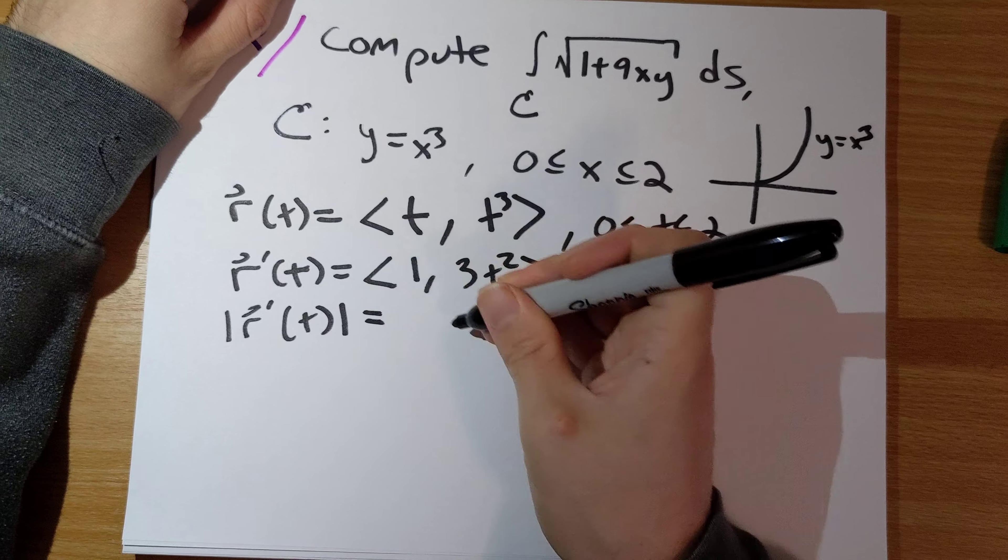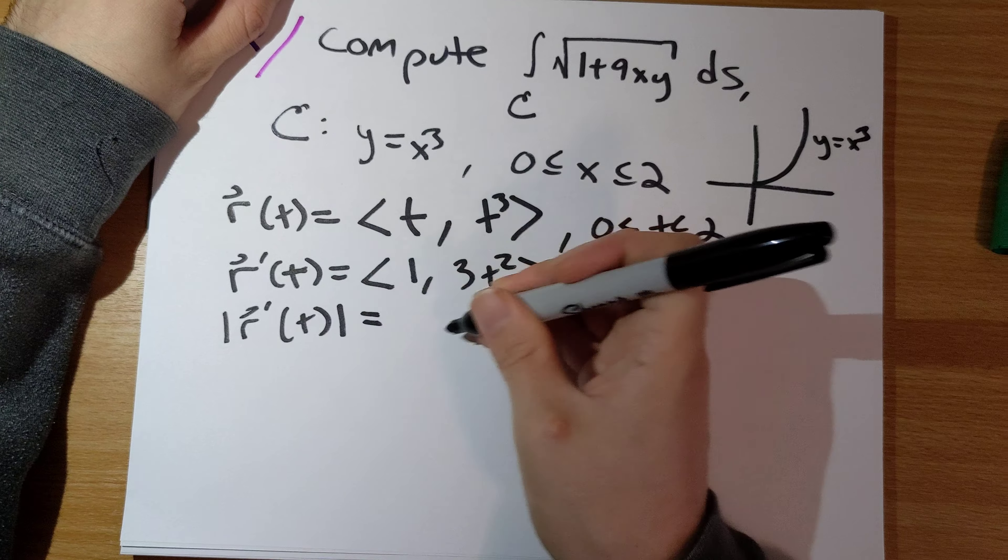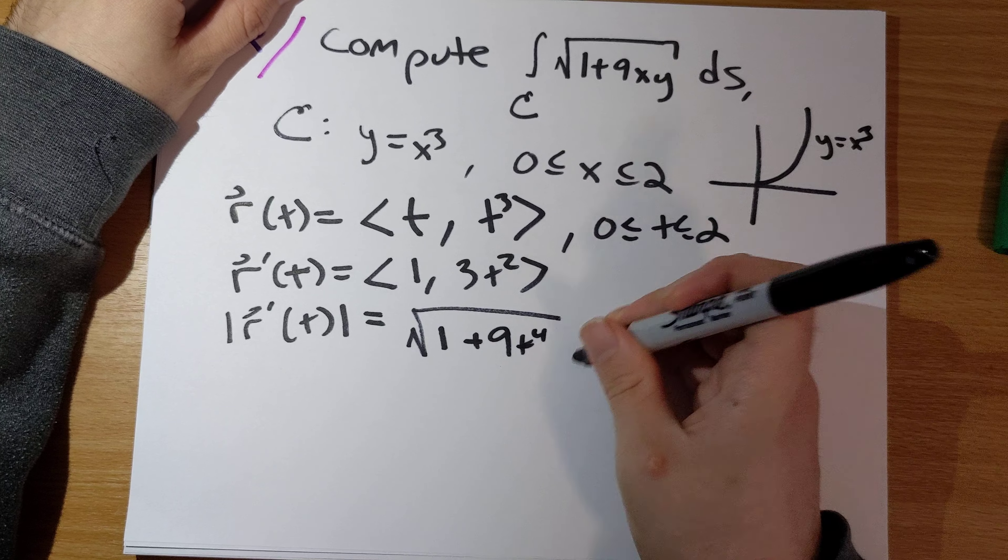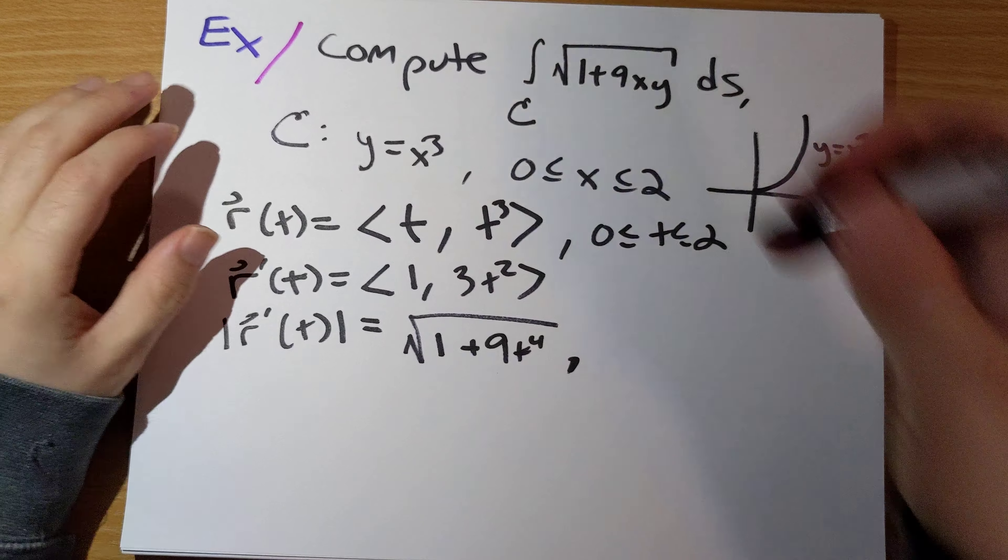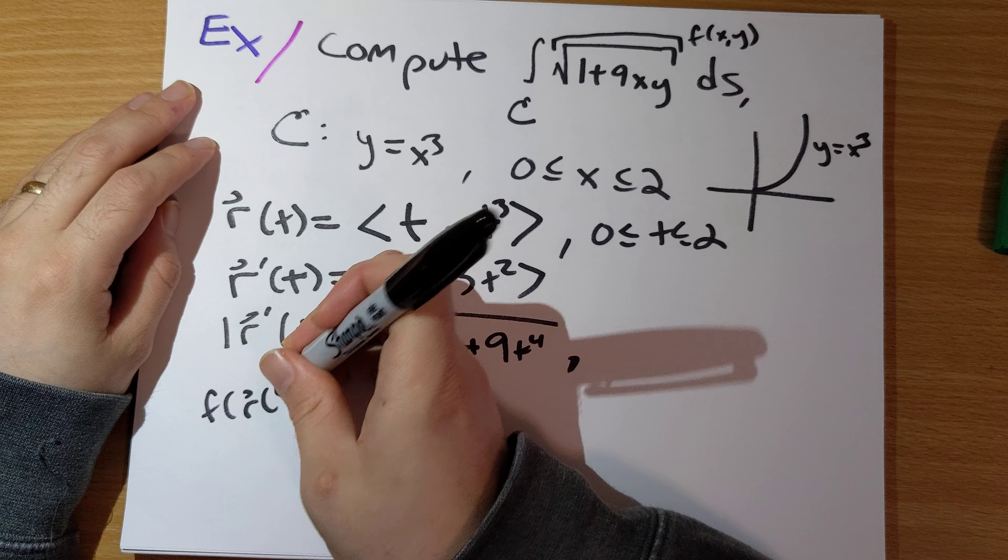So we've got our r of t, our prime of t, we know we need that, it's going to be 1 comma 3t squared. The magnitude of r prime of t is the square root of 1 squared plus 3t squared quantity squared, which is 9t to the fourth.